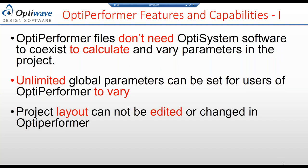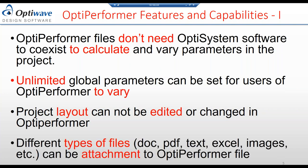Once you create an OptiPerformer file, the project layout cannot be edited or changed — you can only modify the parameters of components that were set in OptiSystem. A good advantage of OptiPerformer is that you can attach files in different formats: doc files, PDF files, text files, Excel, images, and so on. These attachments can contain instructions, specifications, or any information you want to pass to the users — students, technicians, or manufacturing engineers.